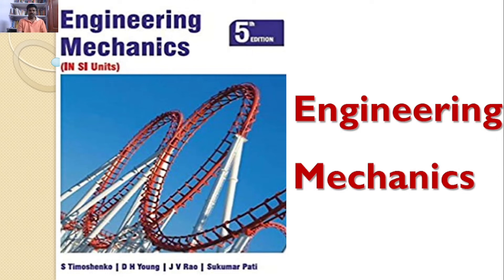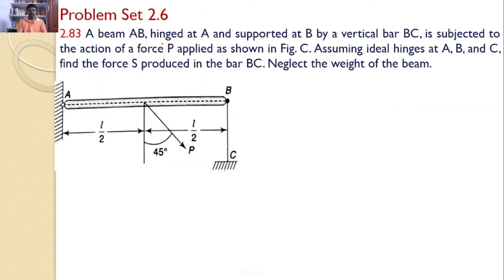Welcome to RK Tutorials, Solutions to Engineering Mechanics by S. Timoshenko, 5th edition. In this tutorial, we will discuss problem set 2.6, problem number 2.83. A beam AB hinged at A and supported at B by a vertical bar BC is subjected to the action of a force P applied as shown in the figure.